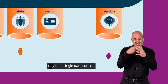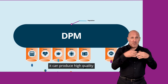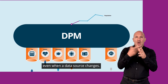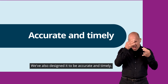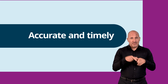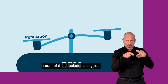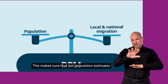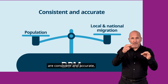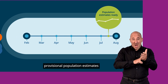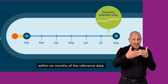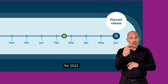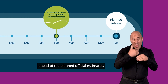And because it doesn't rely on a single data source, it can produce high quality population estimates on time, even when a data source changes. We've also designed it to be accurate and timely. The DPM balances the count of the population alongside local and national migration, which means we can produce provisional population estimates within six months of the reference date. For example, we were able to produce mid-year population estimates for 2022 four months ahead of the planned official estimates.